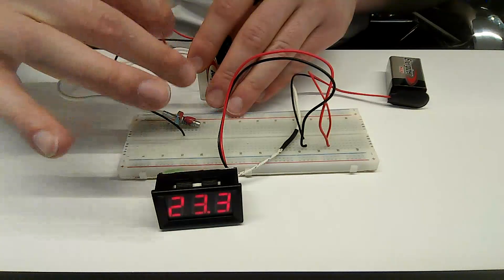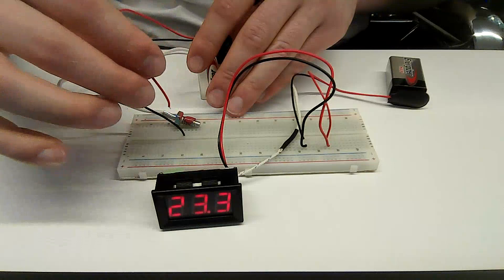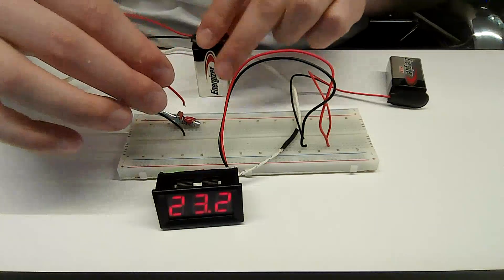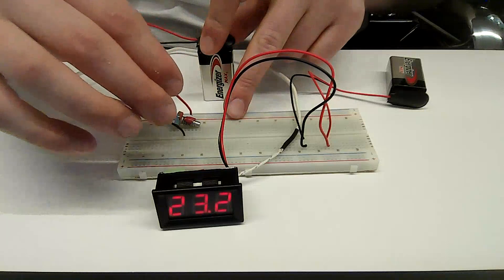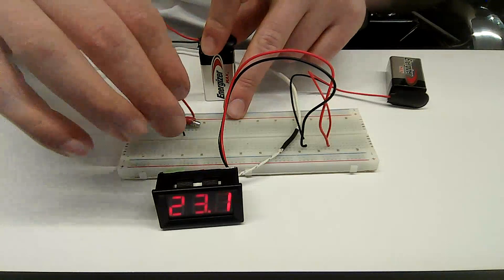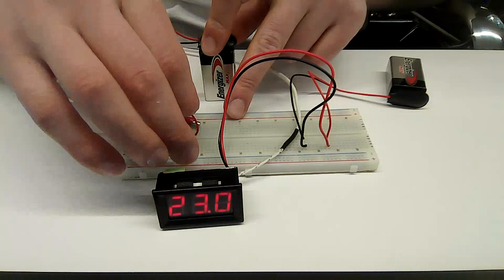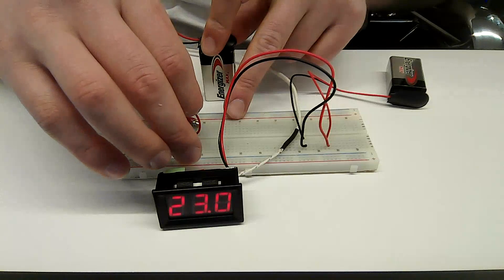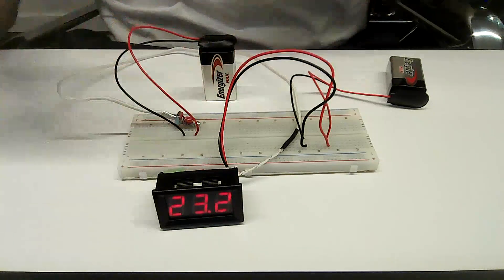And plug in the other battery to the red. These ones, the colors don't really matter. All we're doing is completing a circuit here. One wire going to one of the coils that are inserted into the breadboard, and the other wire going to the other coil that's in the breadboard. And then we should start to see the temperature increase.